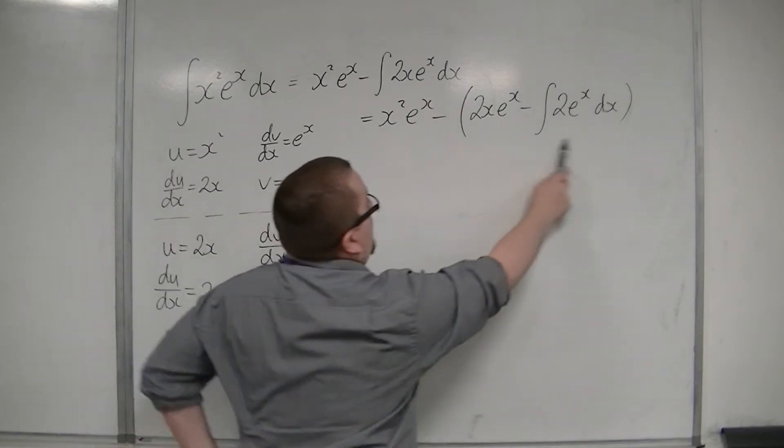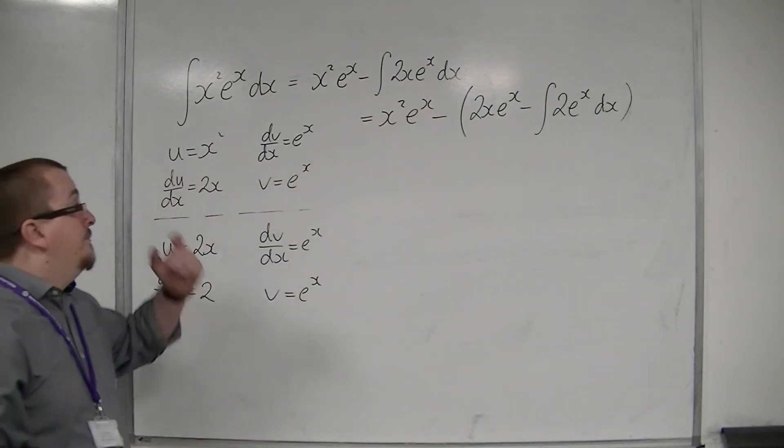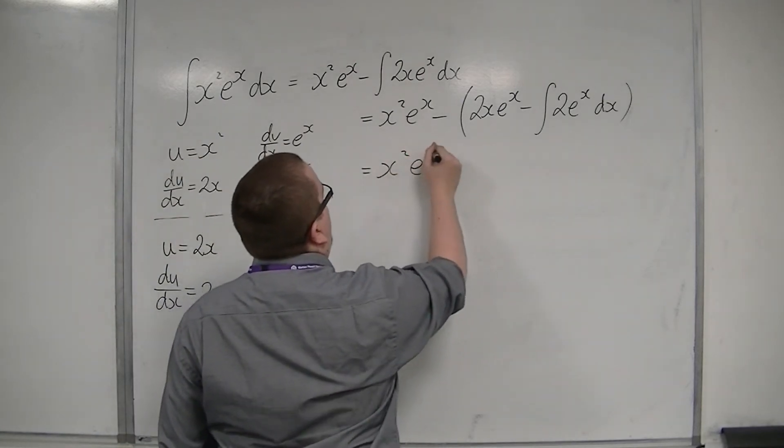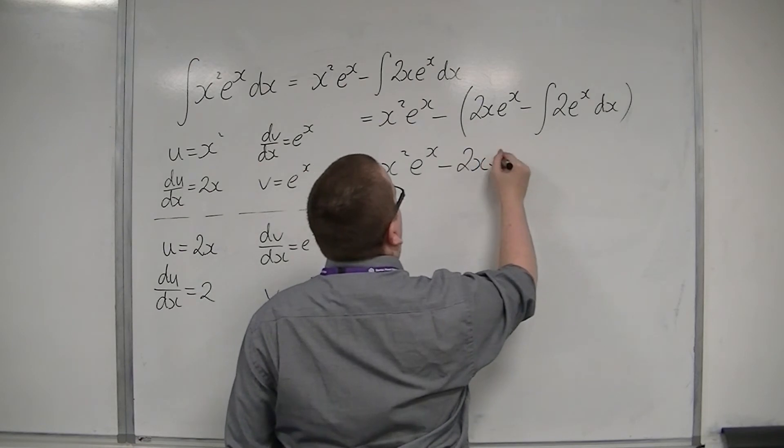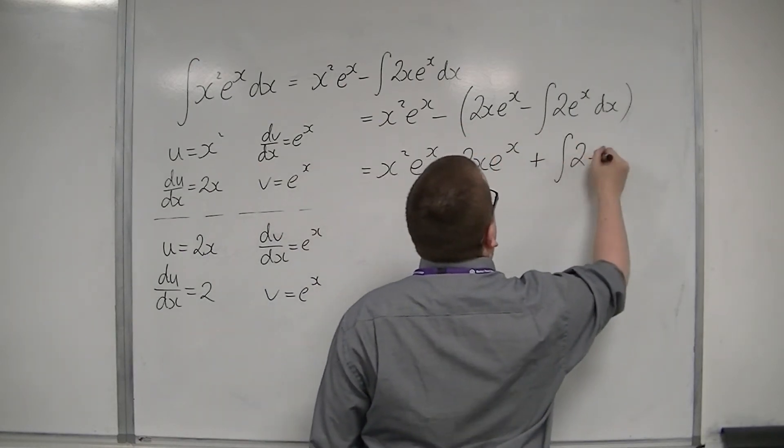So this whole bit in the bracket is the integral of 2x e to the x. So this is equal to x squared e to the x, take away 2x e to the x, and I've got minus minus, so plus the integral of 2 e to the x dx.